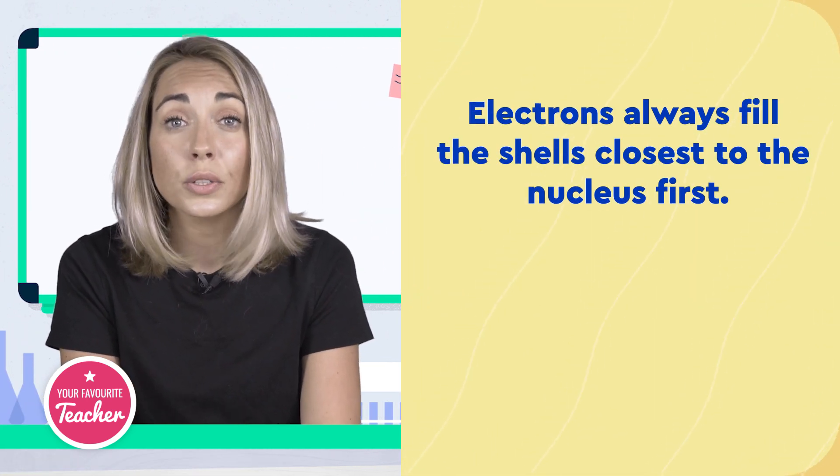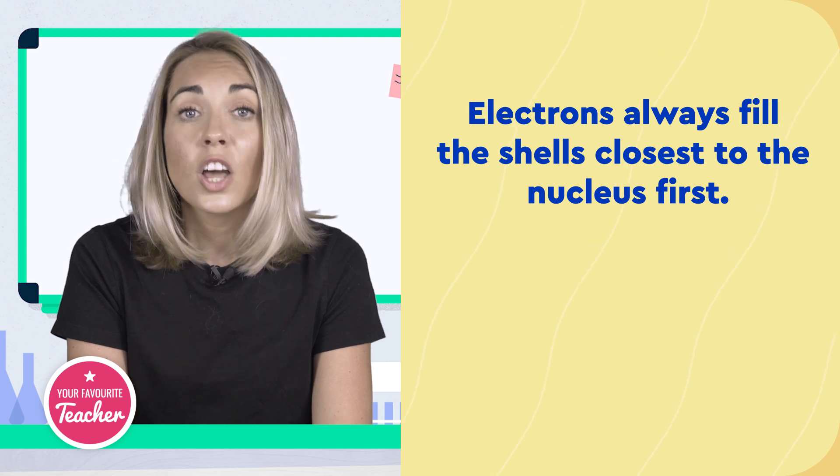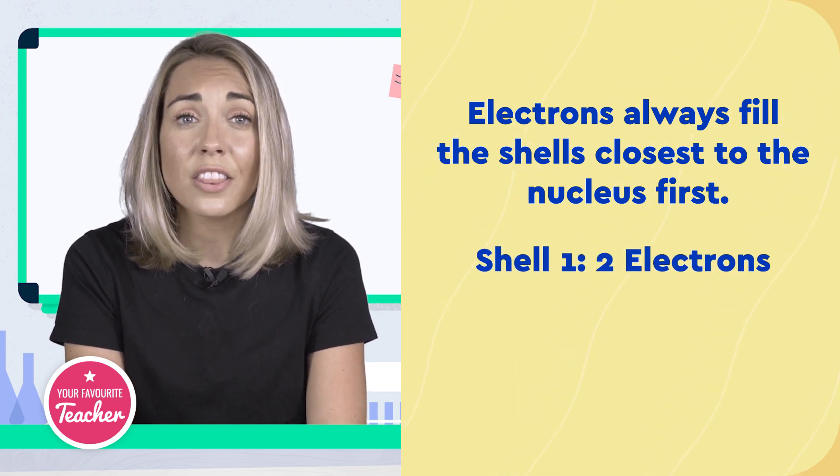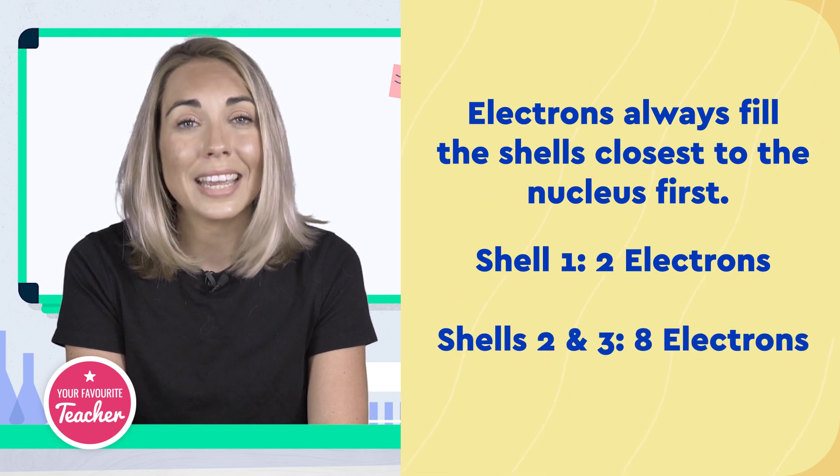So, the rules you need to remember are electrons always fill the shells closest to the nucleus first. The first shell can hold up to two electrons, the second and third shell can hold up to eight electrons.